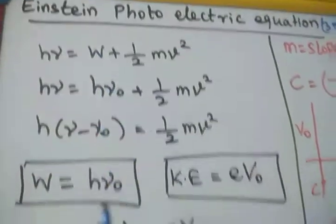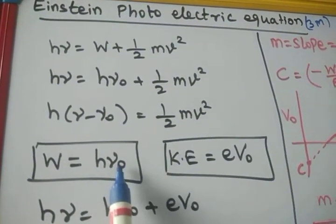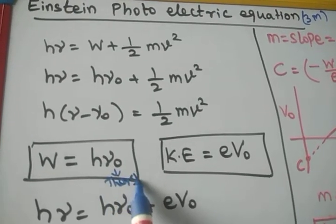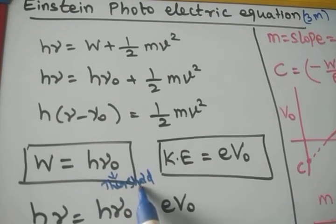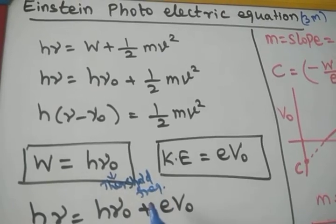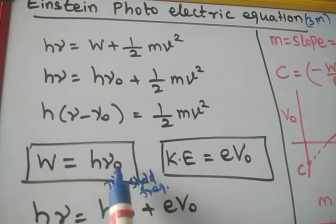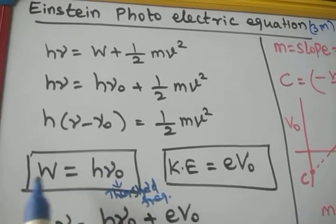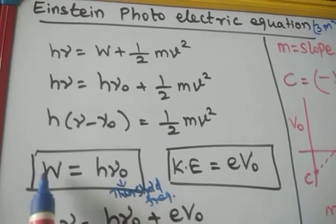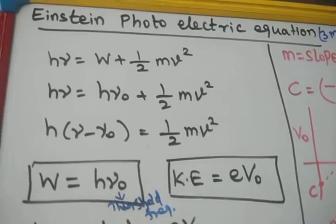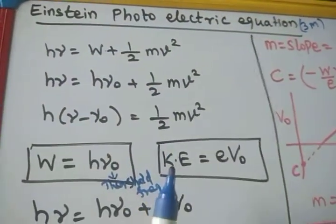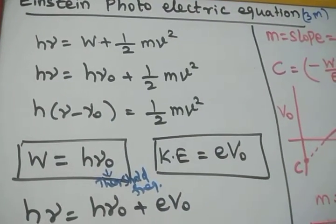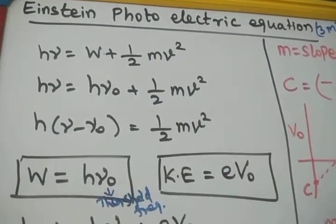So H-nu equals work function plus kinetic energy of the electron — this is called the photoelectric equation. The work function is equal to H-nu-naught, where nu-naught is the threshold frequency — the minimum frequency required to remove the electron from the metal surface. Since H times nu is energy, the work function equals H-nu-naught. So in place of work function, we substitute H-nu-naught, where H is Planck's constant and nu-naught is the threshold frequency, plus kinetic energy of the electron.